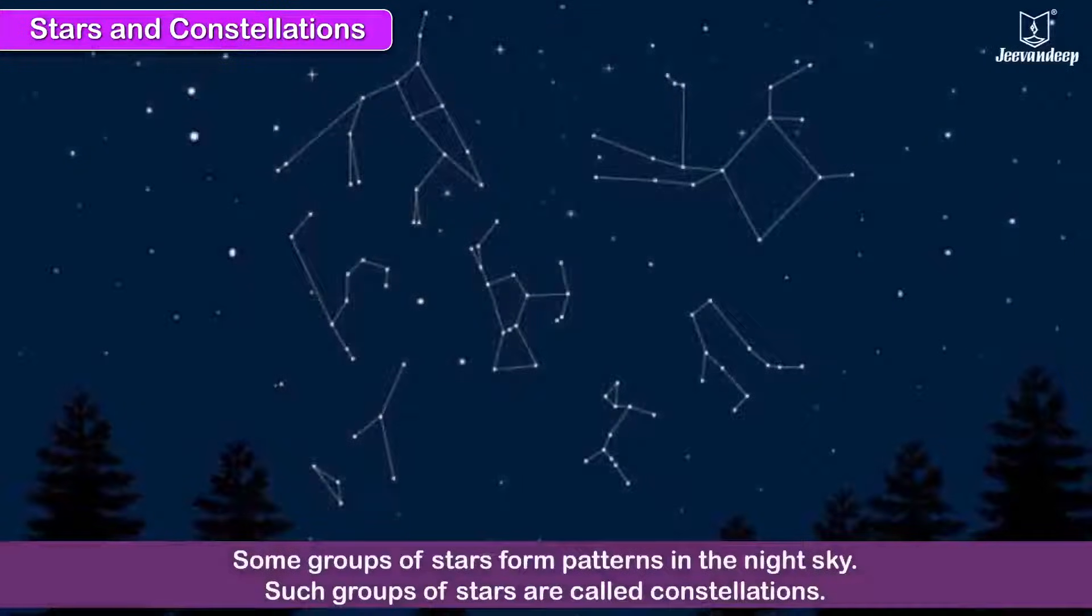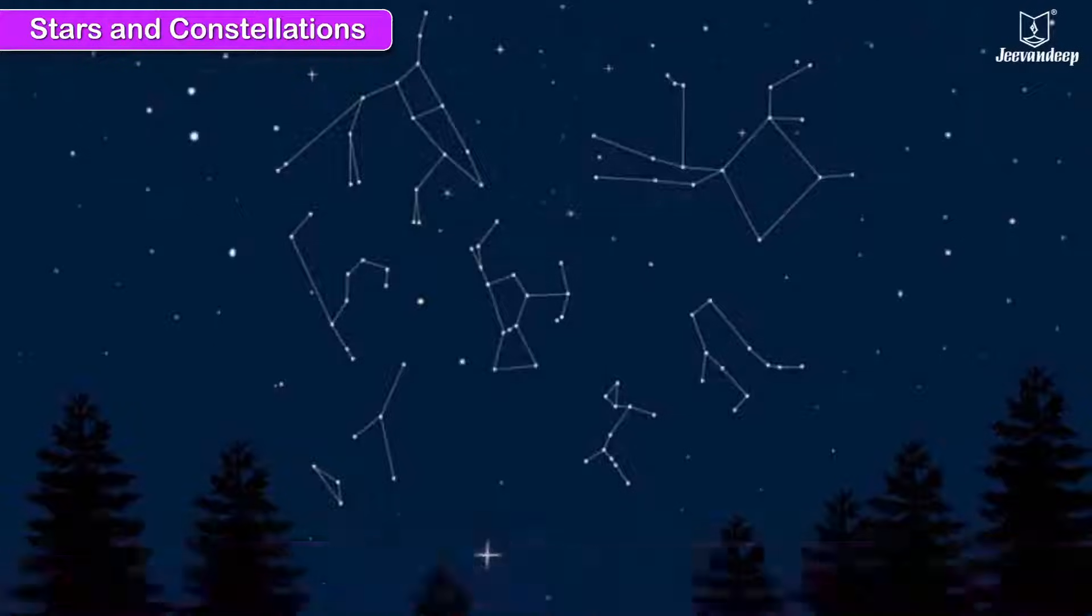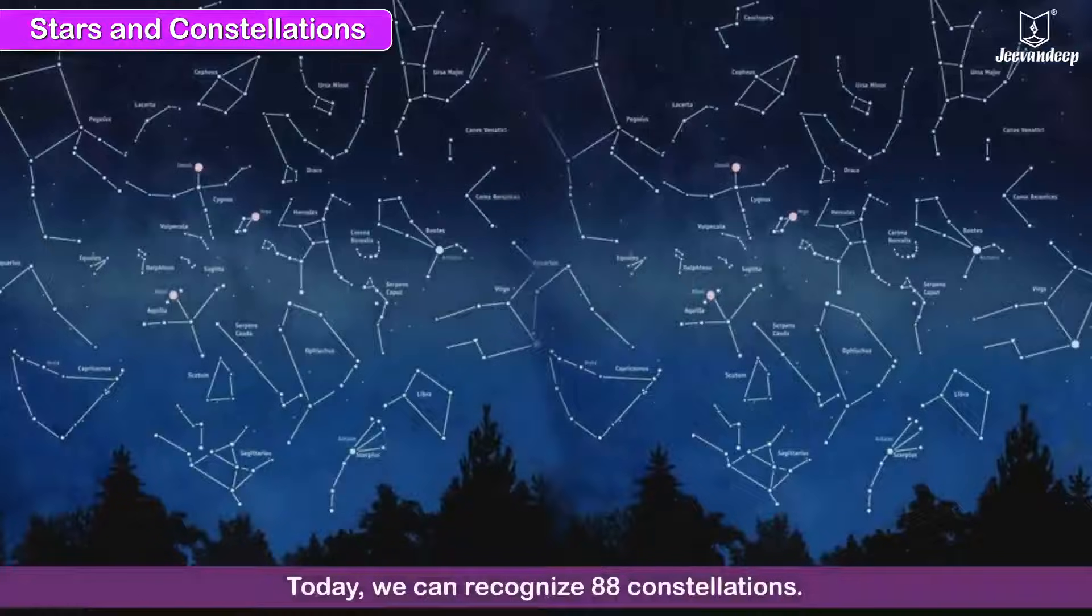Some groups of stars form patterns in the night sky. Such groups of stars are called constellations. Today we can recognize 88 constellations.